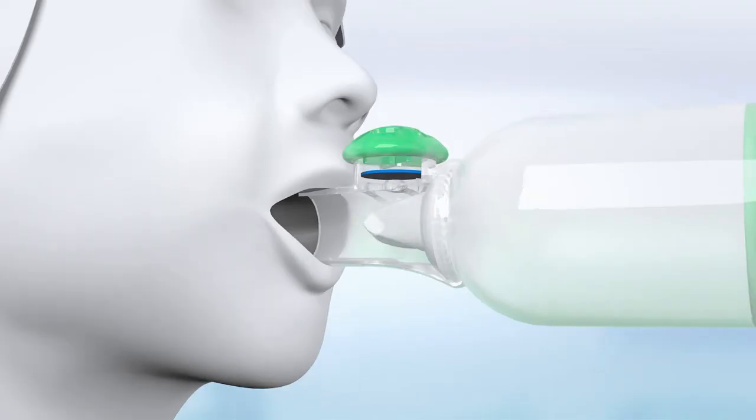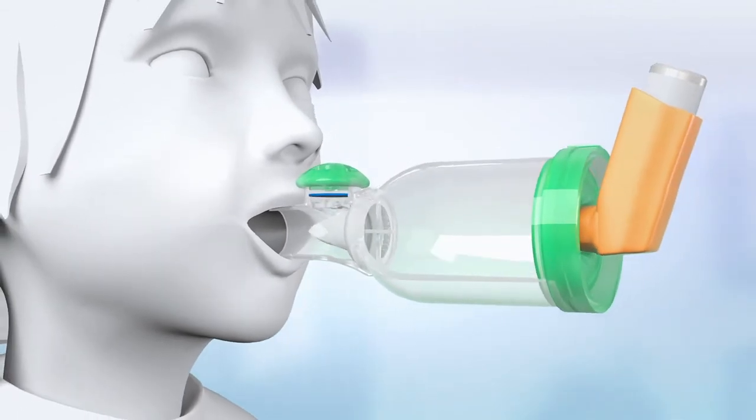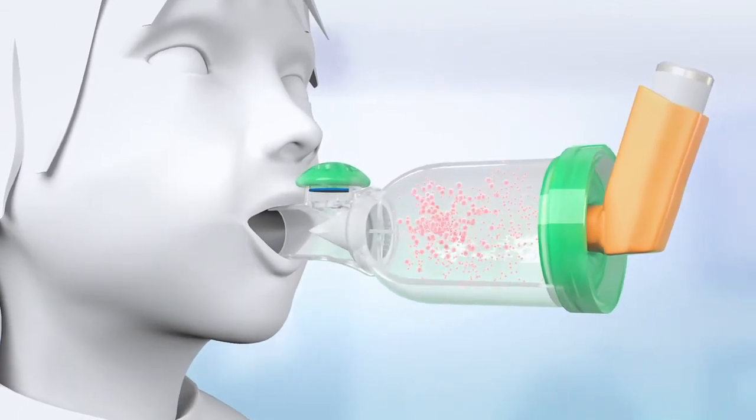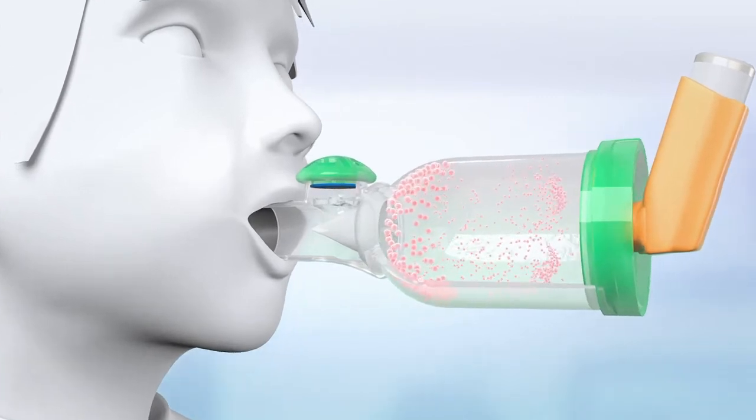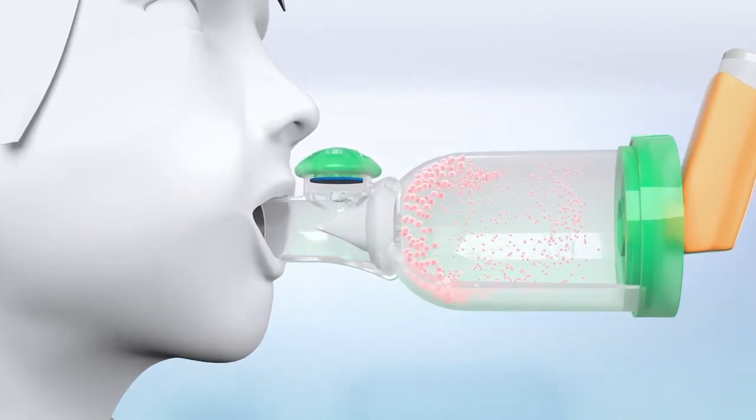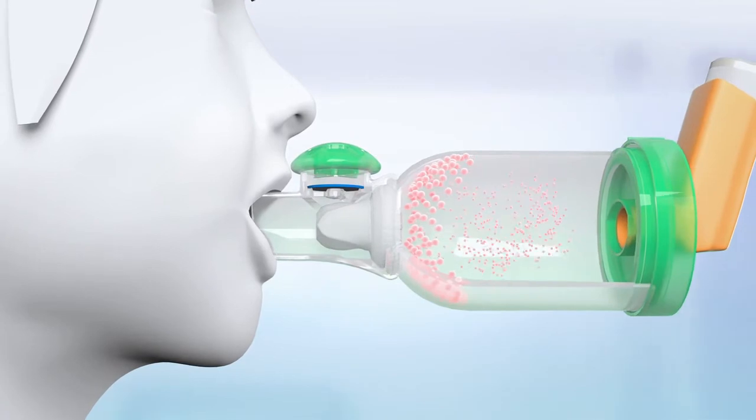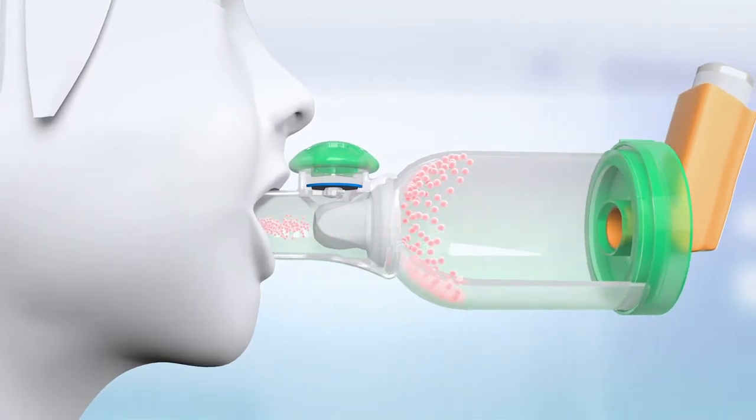Metered dose inhaler releases an aerosol containing the drug particles into the valve holding chamber. Thanks to the characteristics of its materials, Tip Sailor will quickly fix large particles on its walls, preventing their impaction in the throat and the trachea.